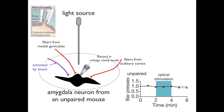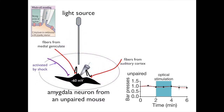A blue light source activated by a laser is placed over the brain slice. The membrane potential of the amygdala neuron is then clamped at minus 60 millivolts. When the blue light is turned on, it activates the transfected axons from the auditory cortex and medial geniculate, thereby releasing transmitter onto the amygdala. The inward positive current carried by sodium is measured and shown in the blue trace labeled inward current at minus 60 millivolts.